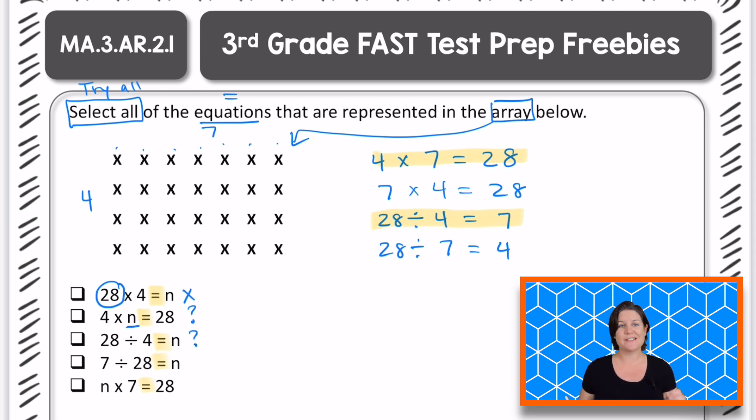The next one says seven divided by 28. Did we have seven total X's that we divided into 28 columns or rows? No, this right here, the seven is not the dividend. It is not the total. This should be 28 going first. So what can we do with this one? Eliminate it or keep it? Let's eliminate it.